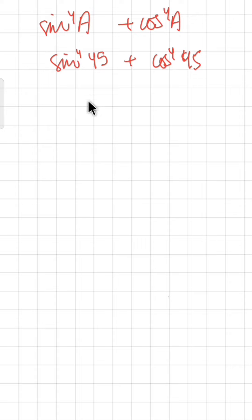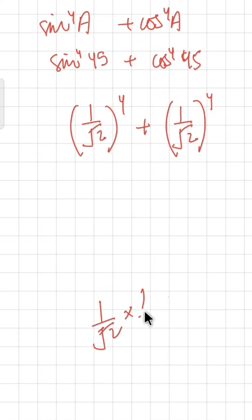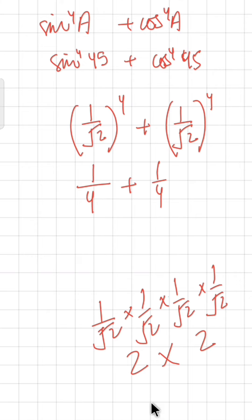So sin(45°) equals 1/√2, and cos(45°) also equals 1/√2. Substituting: (1/√2)⁴ plus (1/√2)⁴. The denominator becomes √2 raised to power 4, which is 2 multiplied by 2 equals 4. So each term is 1/4. I hope it is clear.